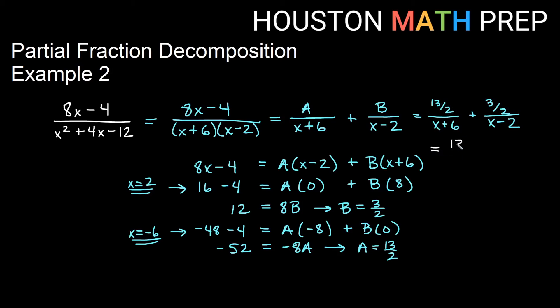we will say 13 over 2 times x plus 6 plus 3 over 2 times x minus 2. You can leave the 2s outside if you want to distribute them so that they are with your factors. You could certainly do that. You could say 13 over 2x plus 12 plus 3 over 2x minus 4 if you prefer.